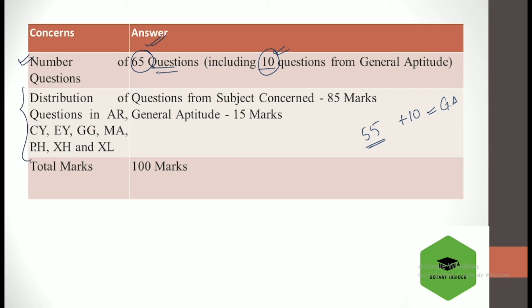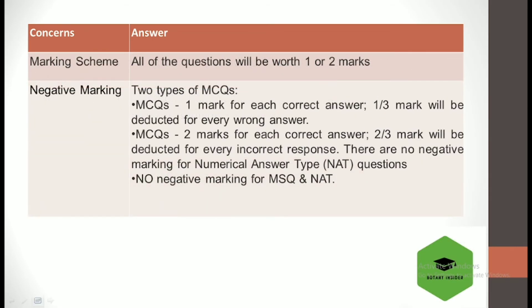Now talking about the distribution of questions, 15 marks are for general aptitude and the subject concerned questions are for 85 marks. Total marks is 100 and you get the scoring out of this 100. On the basis of the same, we have our GATE score for the final result.